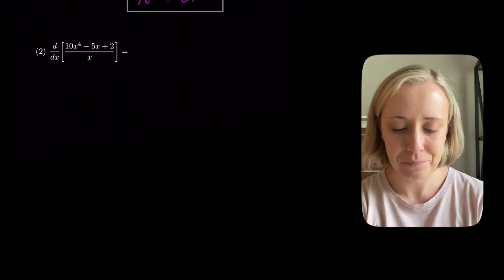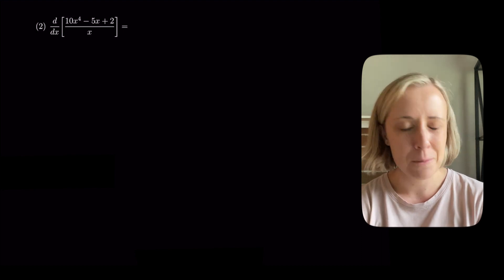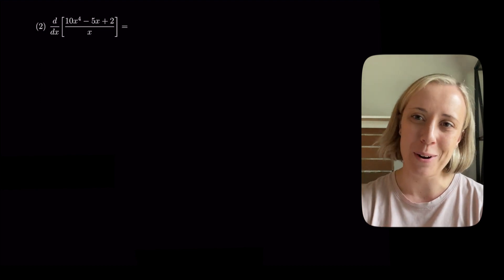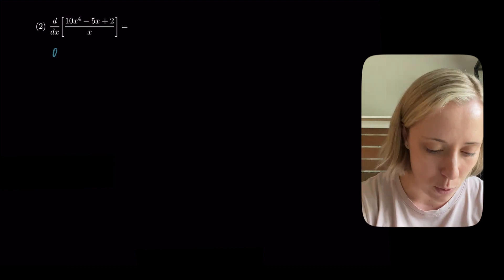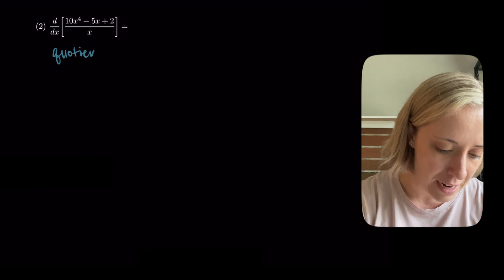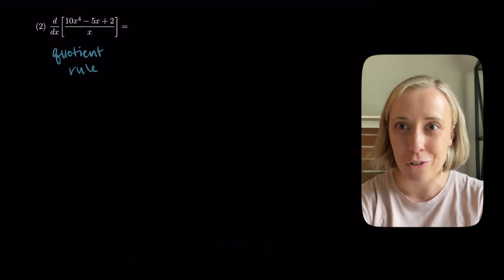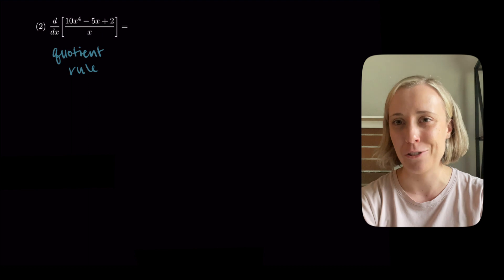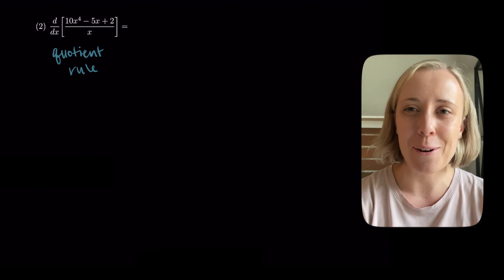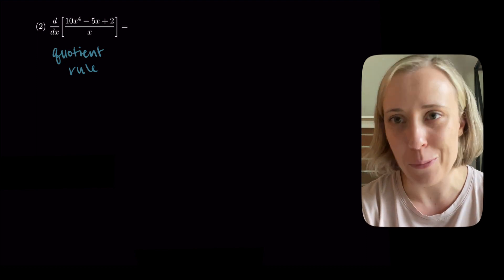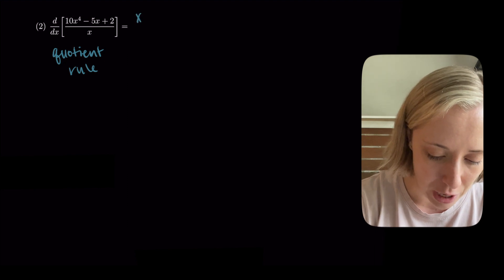Next, we're taking the derivative of (10x⁴ − 5x + 2) / x. When I see that big fraction bar with one thing divided by another, that tells me I'm going to use quotient rule. My memory device is 'low d high minus high d low, all over the low squared,' where 'low' is the denominator and 'high' is the numerator.